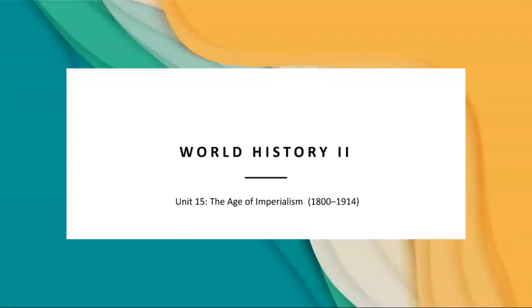Hi and welcome to Unit 15 of World History 2, titled The Age of Imperialism. We will be exploring many pivotal topics that have shaped the course of our history, including the characteristics of imperial rule, the motivations behind European colonial leaders, and the causes and effects of rebellions such as the Sepoy Rebellion, and the efforts of reformers to strengthen China.